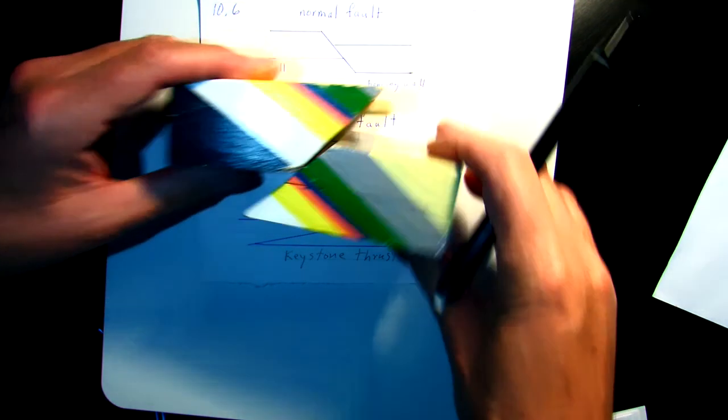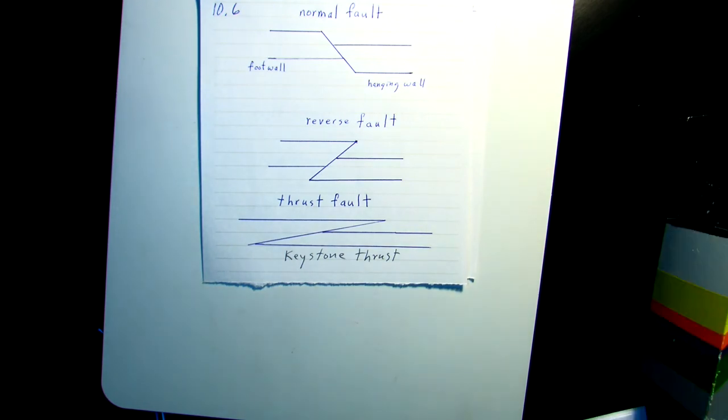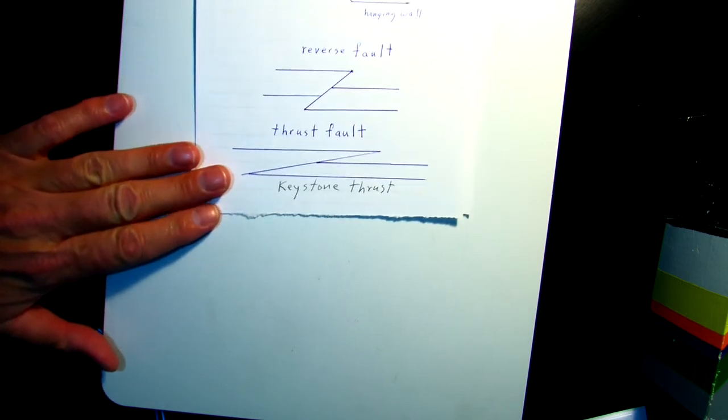Now, there's a special kind of reverse fault, known as a thrust fault. And this is what we see here at the bottom. It's also a reverse fault, but it's a very low angle reverse fault. I want you to look up keystone thrust fault online or in your textbook. You'll see the older rocks are thrust up over the younger rock. There is a sharp color transition between the two of them.